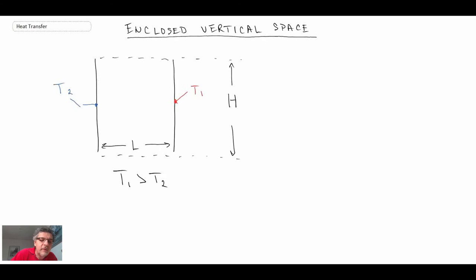So we have an enclosed vertical space. Let's assume first of all that this here is insulated, as is this, and consequently there is no heat transfer in those surfaces.